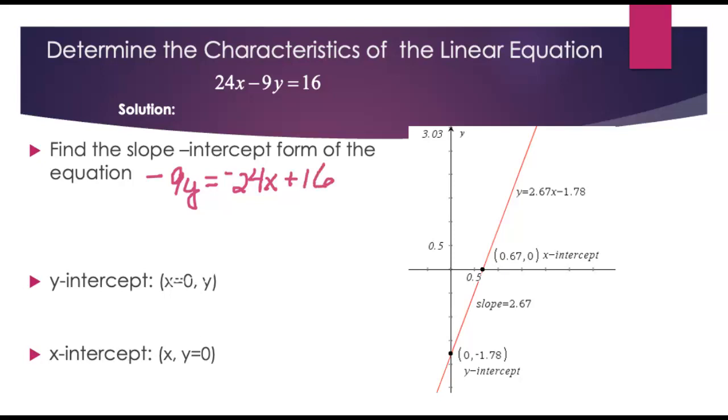The next step is to divide both sides by negative 9 because I want to get rid of that coefficient. So dividing through by negative 9 on both sides of the equation, y ends up being equal to, now 24 over 9, both of those numbers are divisible by 3 and they're negative, so we're looking at 8/3x. And then I want to take 16 and divide it by negative 9, so that's negative 16/9.